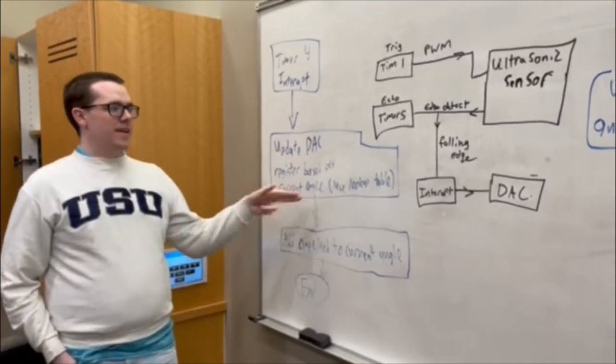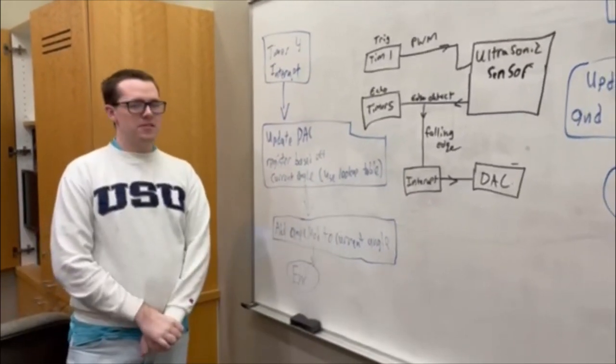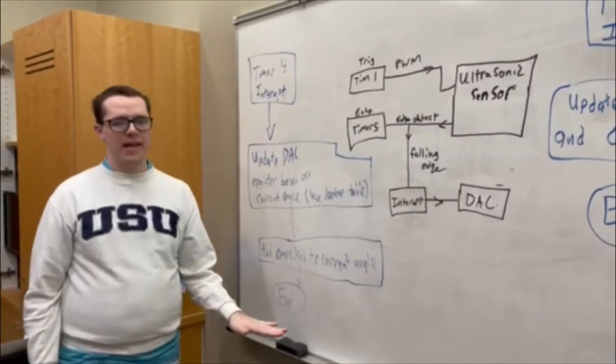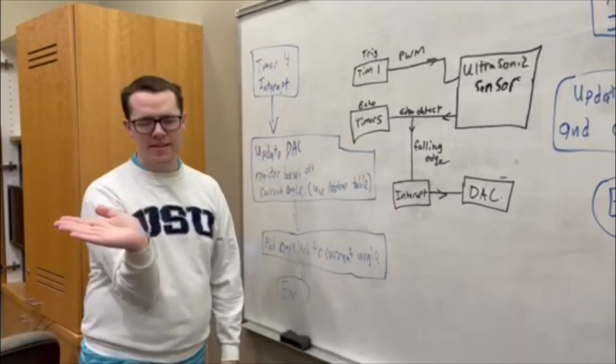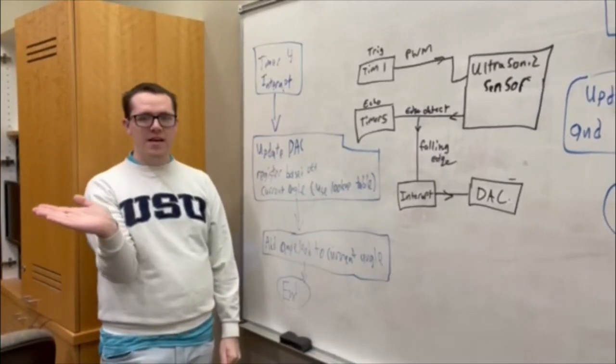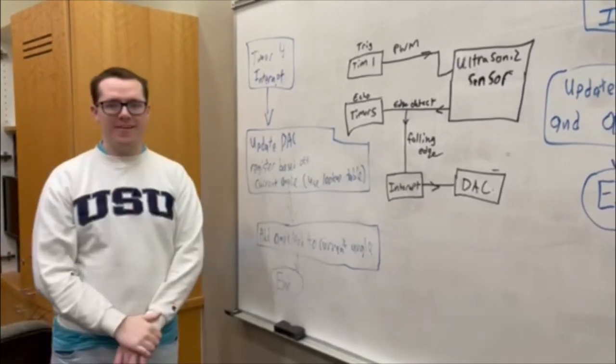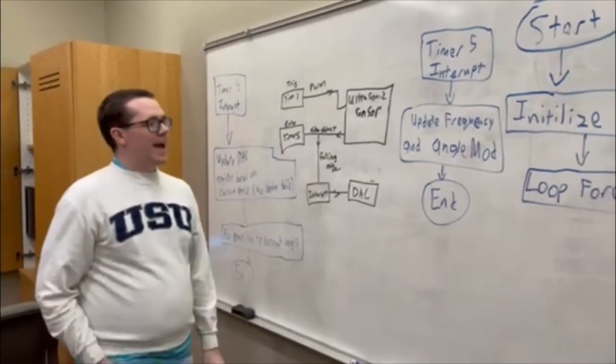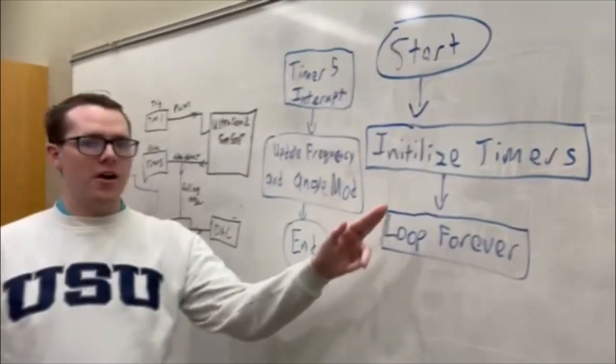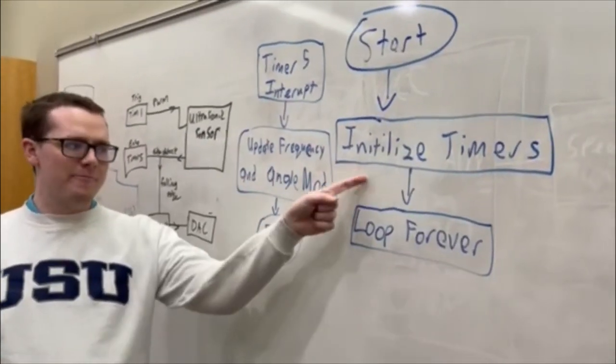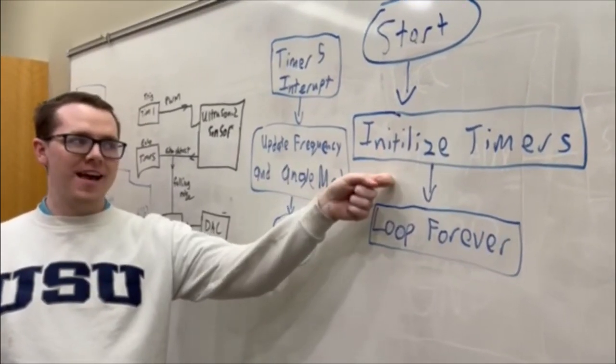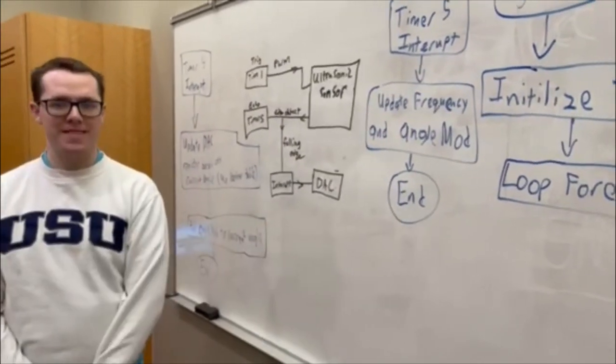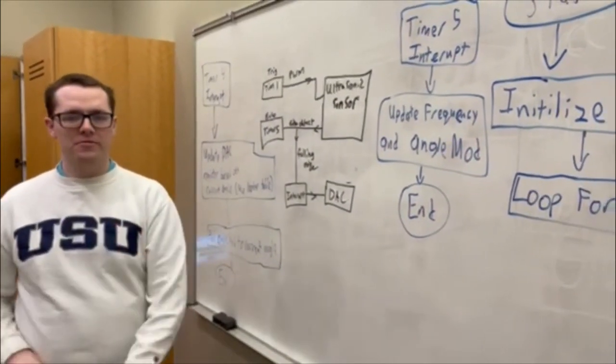After we change the register in the DAC, we add our angle mod to our current angle so we have a continuous angle going through all possible values. At the start of our code, we initialize our timers, and then we have a forever loop so the code never ends. This code is mostly interrupt-based.